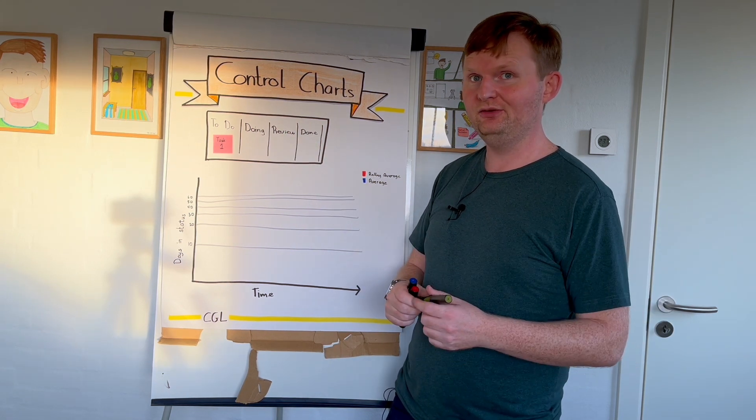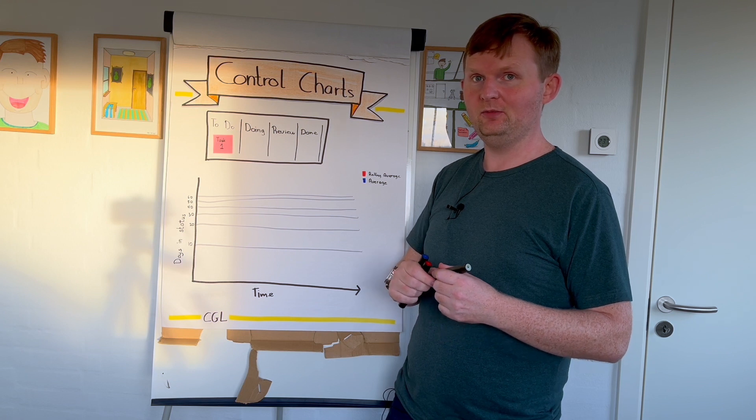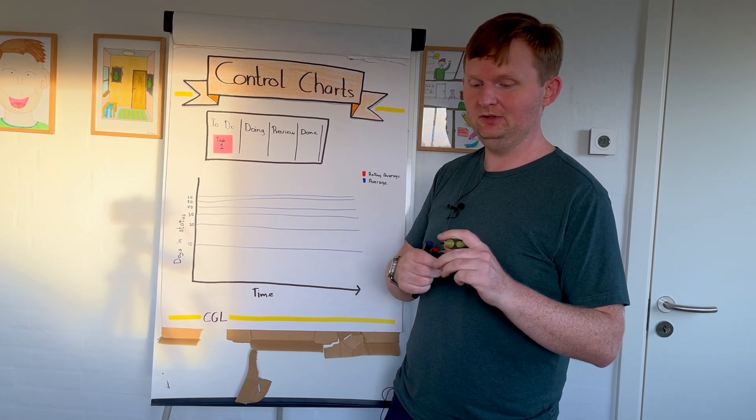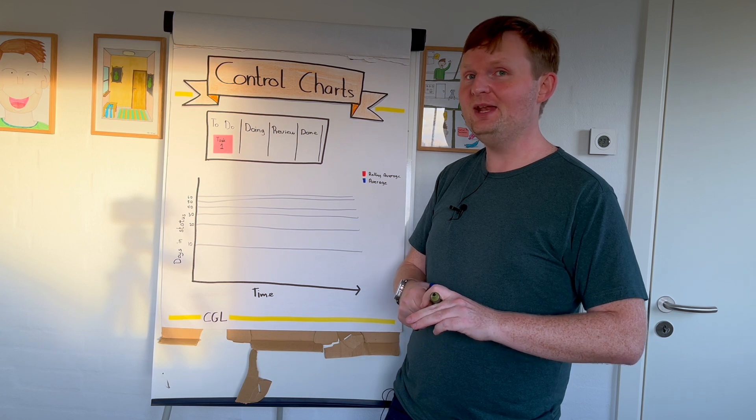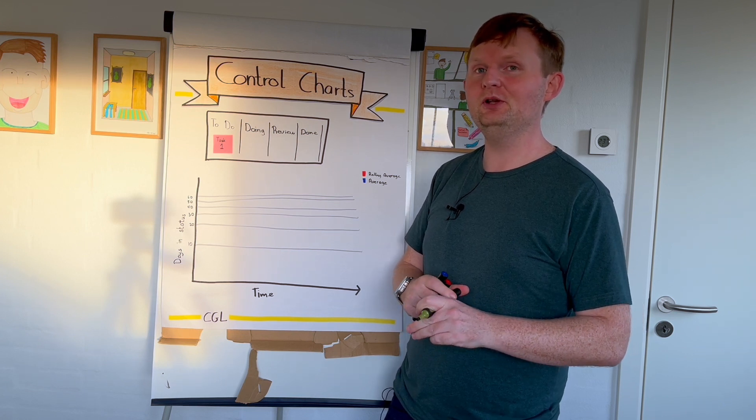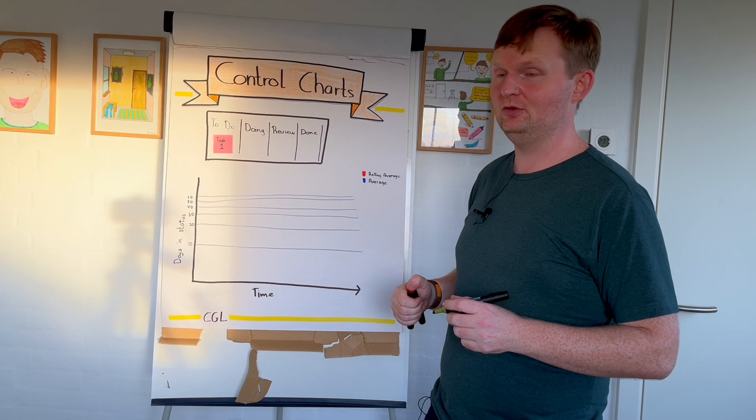If you have access to a black belt Six Sigma people, then get them to analyze your control chart. It's quite amazing what they can pull out of a control chart and really give you some insight.